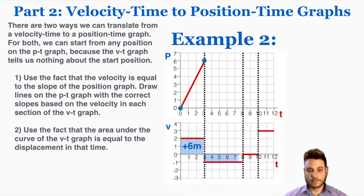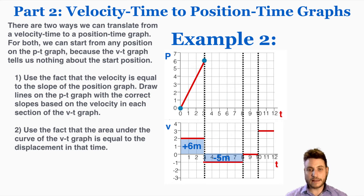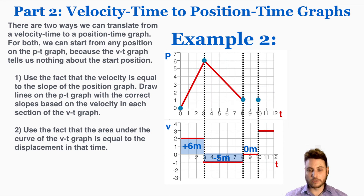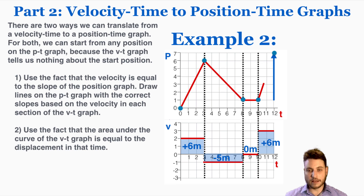In the third section there's no area at all, so the change in position is 0 meters — the position stays the same for those 2 seconds. Finally, the last area is also positive 6 meters, covered in 2 seconds, so the position goes up 6 in 2 seconds. That's how you translate from velocity-time graphs back to position-time graphs using the area under the curve method.